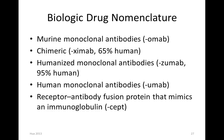Regarding monoclonal antibody nomenclature: -omab indicates a murine monoclonal antibody. -ximab is chimeric, meaning about 65% of the antibody is from a human. -zumab is a humanized monoclonal antibody at 95% human. -umab by itself is a fully human monoclonal antibody where human antigen was used to raise the antibody. And -cept usually indicates that it is a receptor-antibody fusion protein that mimics an immunoglobulin.